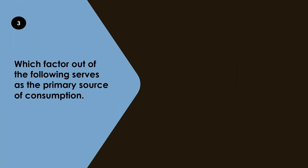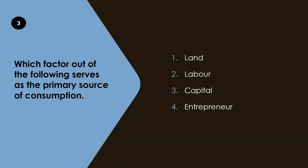Now let's move to the third question. Which factor out of the following serves as the primary source of consumption? The options given to us are land, labor, capital, and entrepreneur — all factors of production. So which factor serves as the primary source of consumption?